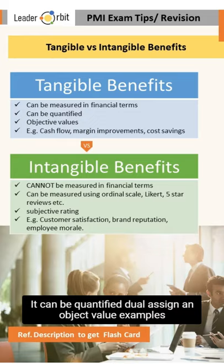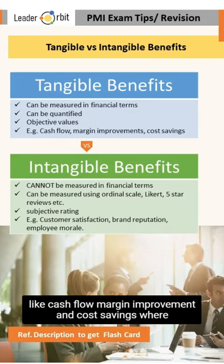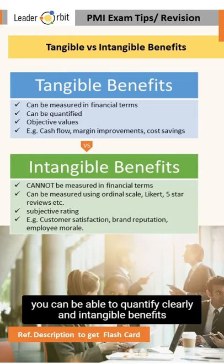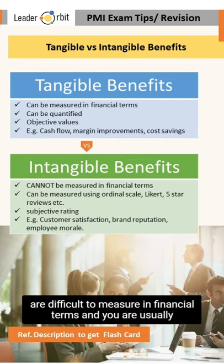Tangible benefits can be quantified — you assign an objective value. Examples include cash flow, margin improvement, and cost savings, where you can clearly quantify the outcome. On the other hand, intangible benefits are difficult to measure in financial terms.